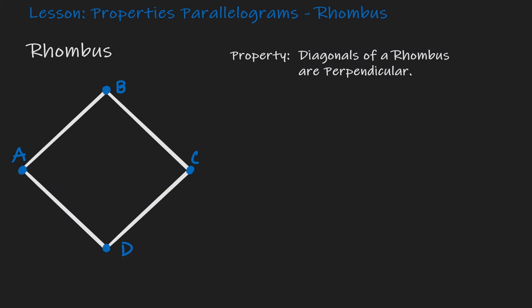Let's start by writing down the properties of a rhombus. If we have a rhombus then we know that all sides are congruent to each other. Let's draw those diagonals — a diagonal that connects A to C and another diagonal that connects B to D. Now we already know that a rhombus is a parallelogram, and we have already shown before that within a parallelogram diagonals bisect each other.